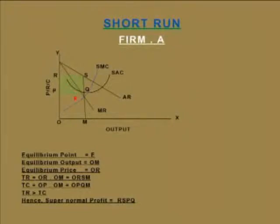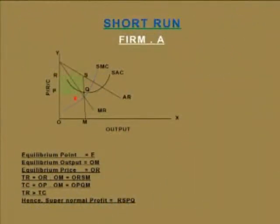The AR line indicates the average revenue or demand curve of the firm. MR indicates marginal revenue, which normally lies below the average revenue line. SAC is the short-run average cost curve, and SMC is the short-run marginal cost curve. To fix the price and output, we find the equilibrium point using two conditions: marginal cost equals marginal revenue, and the marginal cost curve cuts the marginal revenue curve from below. Applying these, point E is the equilibrium point.